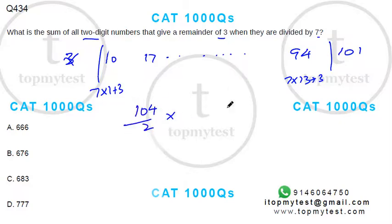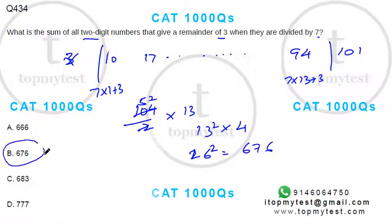So that's 52 into 13, which is 13 square into 4. So it's 26 square, that's 676. Option B is your correct choice. That finishes this one.